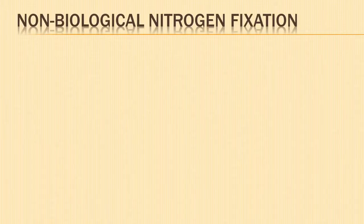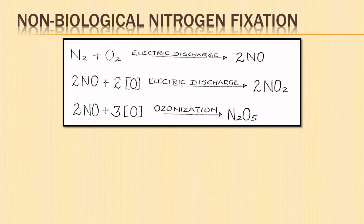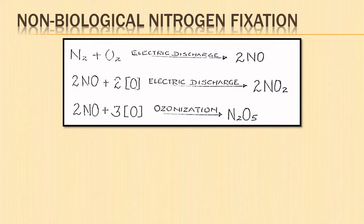Let us understand non-biological nitrogen fixation. Atmospheric nitrogen and oxygen, in the presence of lightning or electrical discharge in clouds, combine to produce different nitrogen oxides. This is known as electrochemical fixation of nitrogen.